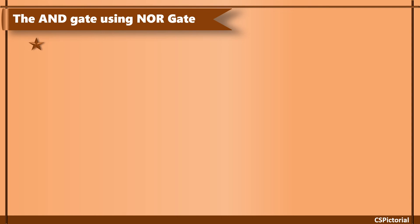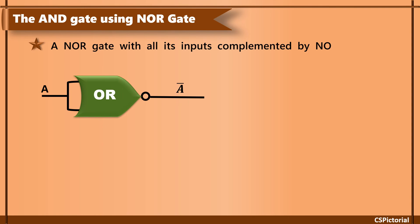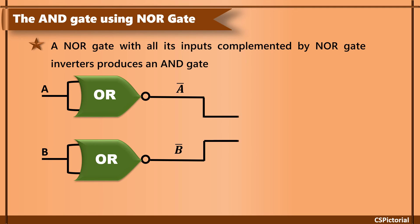The AND gate is implemented using NOR gate by first complementing all the inputs using NOR gates and then connecting the complemented inputs to a NOR gate.